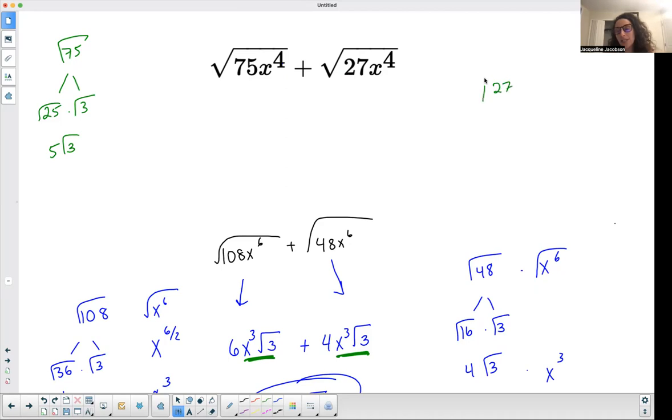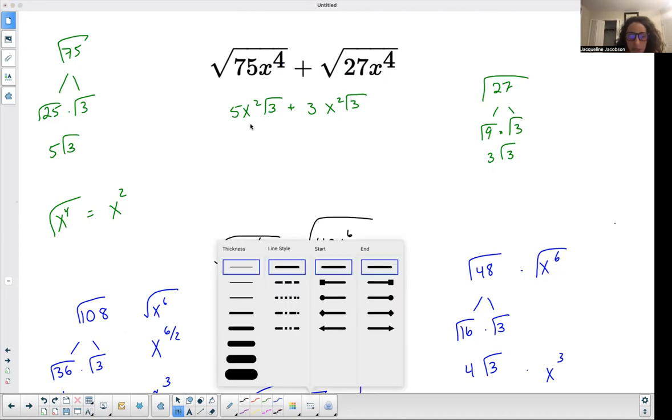So this is a five times the square root of three, 27. I'm thinking of perfect squares, a nine and a three, factors of 27 that are perfect squares. So this is going to be three times the square root of three. And then both of them have this square root of x to the fourth, which if I use my little trick, this is the same thing as x to the four divided by two, the index is two, so four divided by two, so x squared. So I'm going to have a five x squared times the square root of three plus a three x squared times the square root of three.